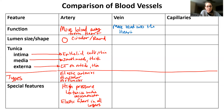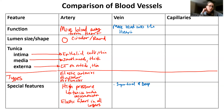Veins, unlike arteries, will run both superficial and deep. That's one of their special features. What that means is there's often a set of veins that run over the muscle but don't have a corresponding artery.